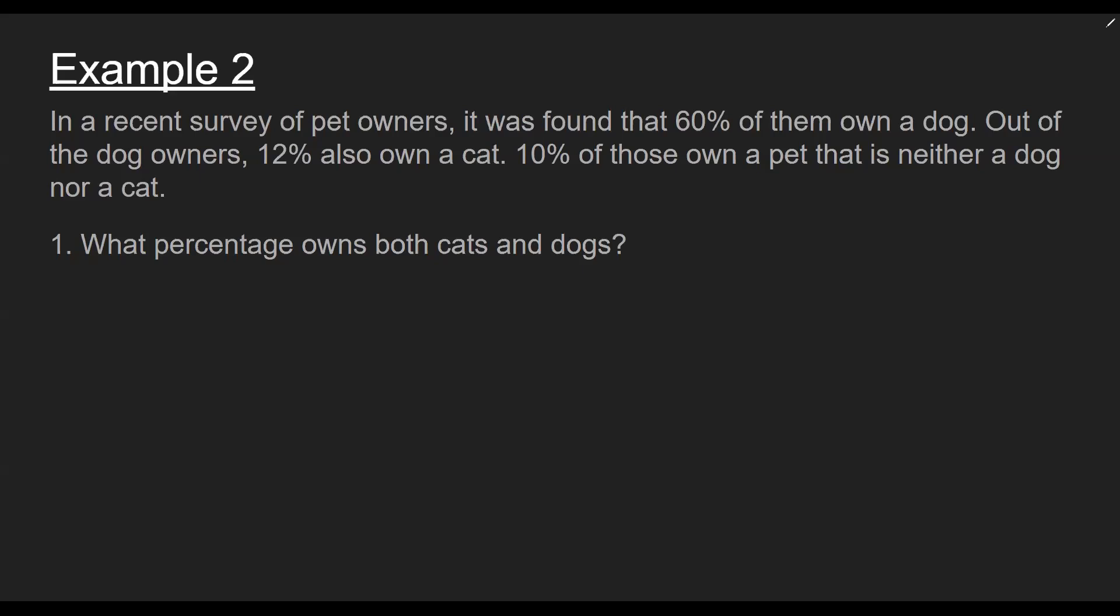And the question is finding the percentage of owners that own both cats and dogs. So what I want to start with will be to label the events that are given. So we're given piece of information regarding dog and cat owners. So let's start there. Instead of using A's and B's, I like to use letters that make sense. So here I'm going to let the letter D represent dog owner.